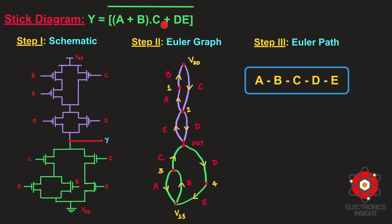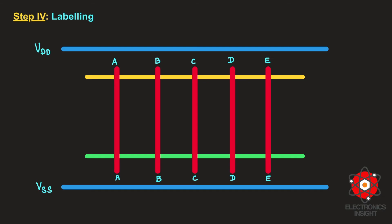As per the stick diagram design rules covered in part one, I have first fixed the VDD and VSS layers with sufficient space between them. Then we have the P-diffusion layer for the pull-up network and the N-diffusion layer for the pull-down network. Since we have five inputs, five polysilicon gate terminals are needed, represented using red color layers. The gate inputs are labeled A, B, C, D, and E.